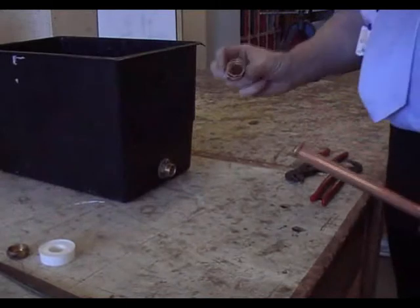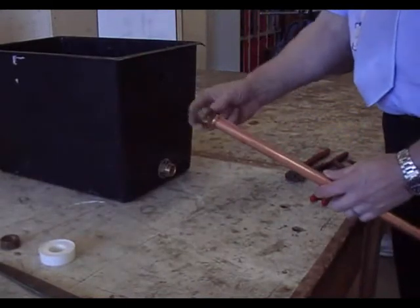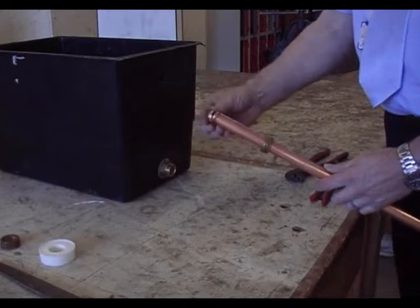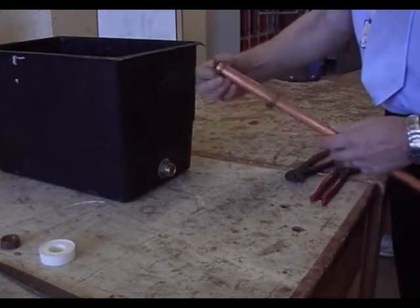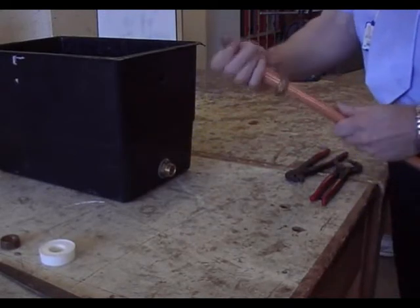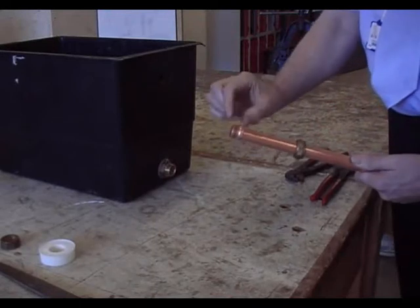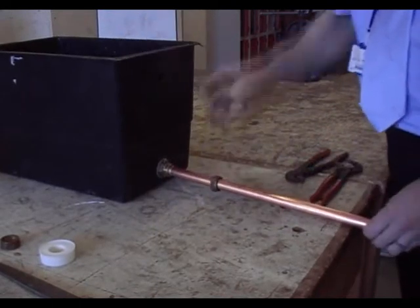Now make sure you've got your right nut. It's not that one, it's this one. I can tell them by sight, but if you're new, just wind it up again and check. Put your olive on, make sure your olive's on far enough, that it's not standing on the end of the pipe, because you don't want to crush it on the end of the pipe, you'll have a leak. So, it's got to be over the pipe.